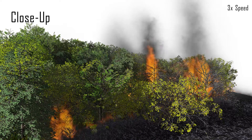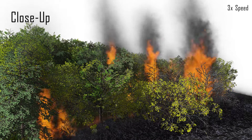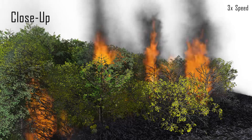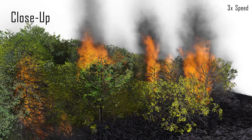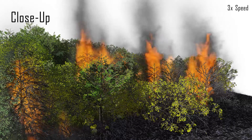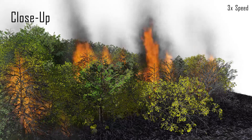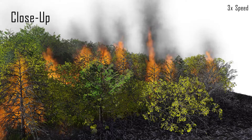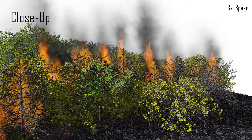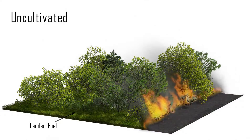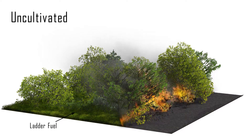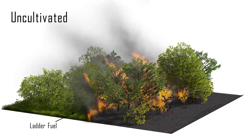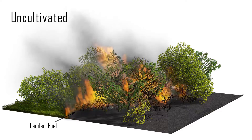In a mixed deciduous and coniferous forest, a wildfire may primarily combust drier trees, resulting in active crown fires that leave some trees alive. Active crown fires are the result of vertical flame spread, which occurs as a result of a vegetation distribution of unequal height.